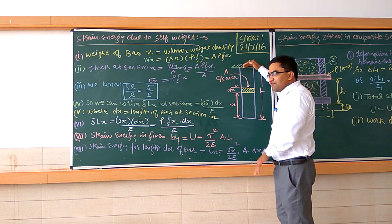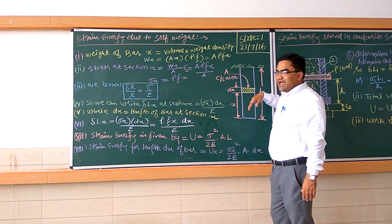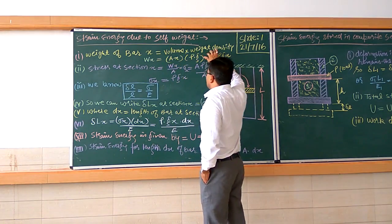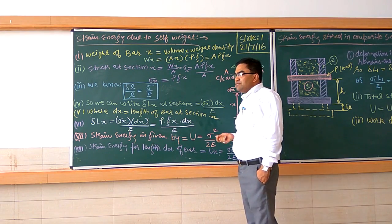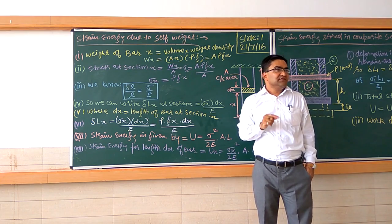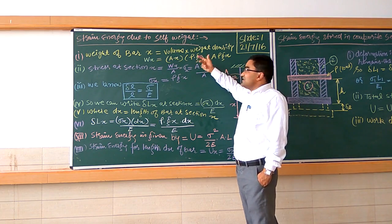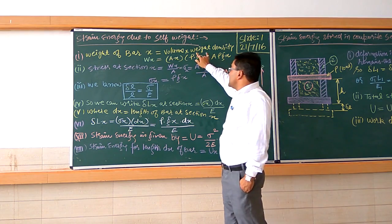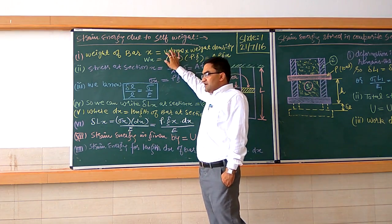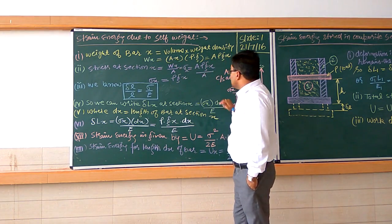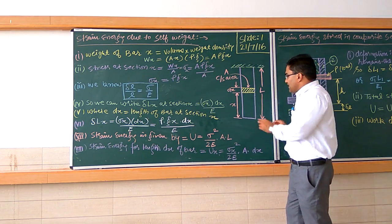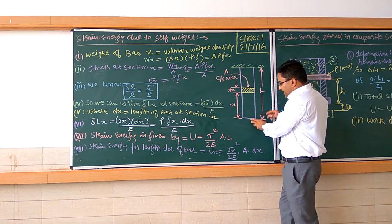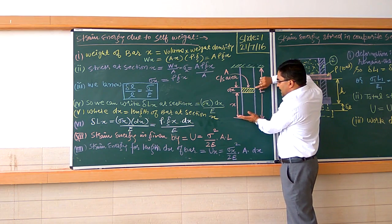The bar is under gravity — the lower part or complete part is under gravity, meaning its own weight is acting on it so as to cause elongation. The weight of this bar can be calculated as volume into the weight density. Weight density means density multiplied by small g. Since we are assuming a section here, we will calculate the weight of this section up to x — meaning at this strip.